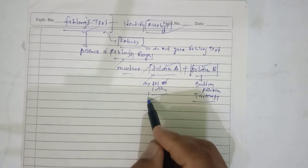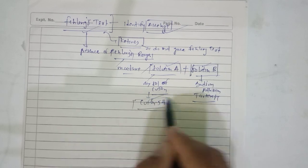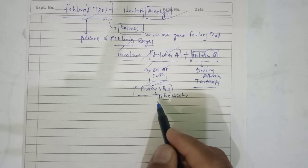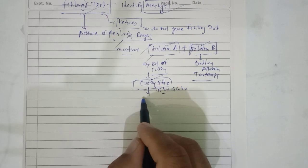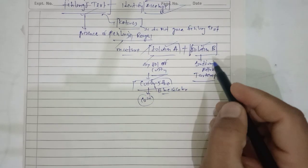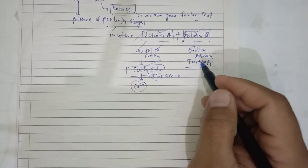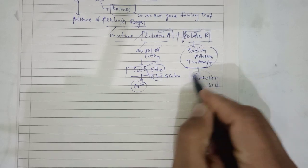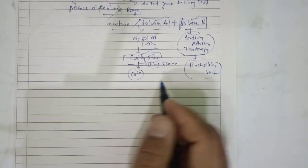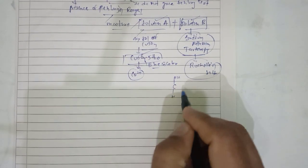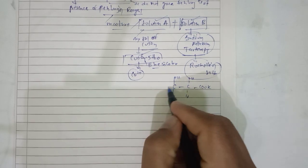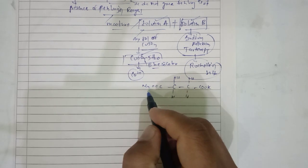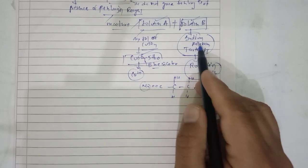Solution A is an aqueous solution of copper sulphate — formula CuSO₄·5H₂O, that is copper sulphate pentahydrate — and it is blue in color due to the presence of copper Cu²⁺ ions. Solution B is sodium potassium tartrate, which is also called Rochelle salt. It can be represented with the structural formula: CHOH-CHOH with COO⁻ groups, one side carrying Na⁺ and the other K⁺.